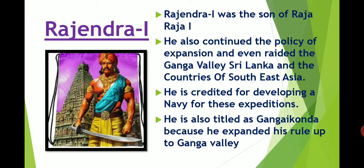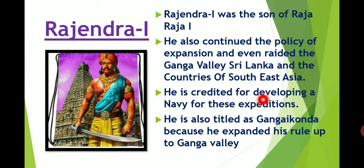Rajendra I was the son of Raja Raja I. He continued the policy of expansion and even raided the Ganga Valley, Sri Lanka, and the countries of Southeast Asia — expanding the kingdom not only within India but also abroad. He is credited for developing a navy for these expeditions. Rajendra I is also titled Gangaikunda because he expanded his rule up to the Ganga Valley.